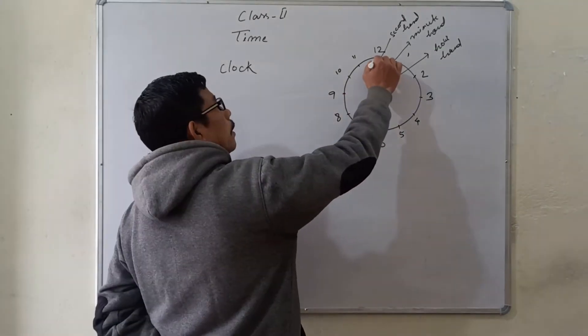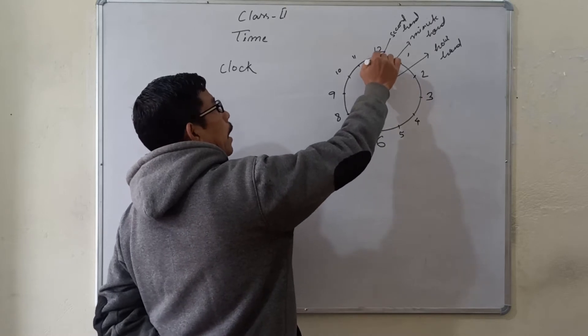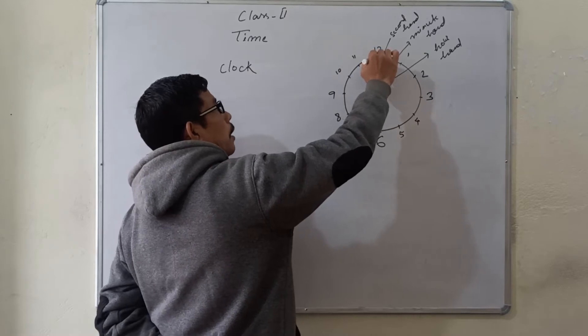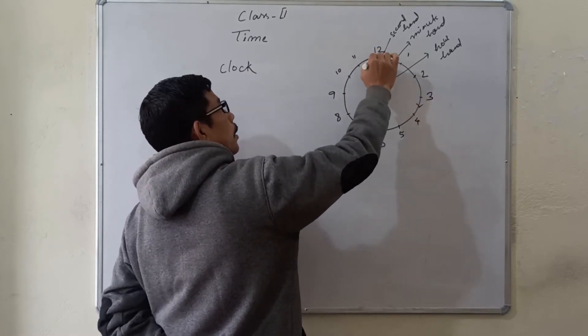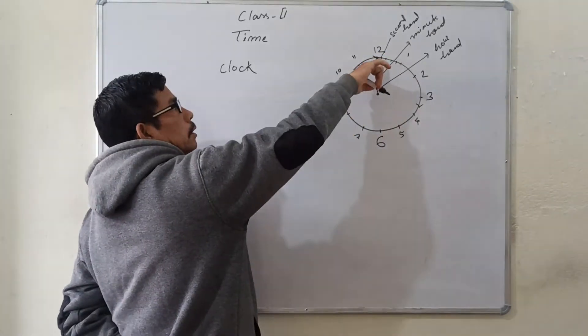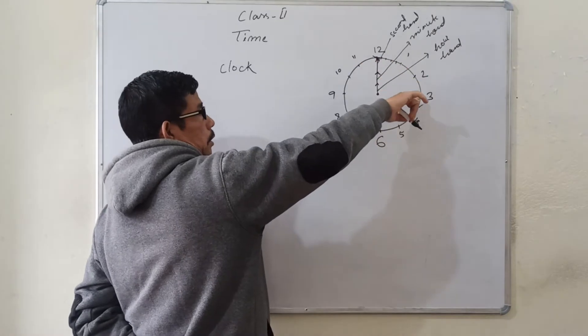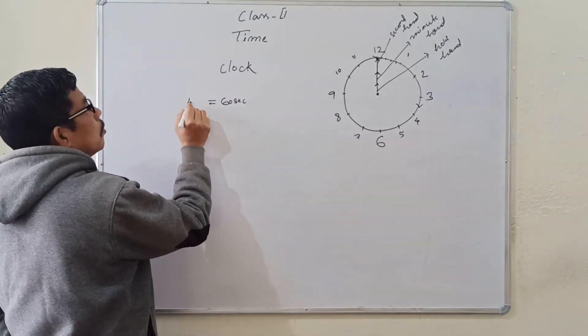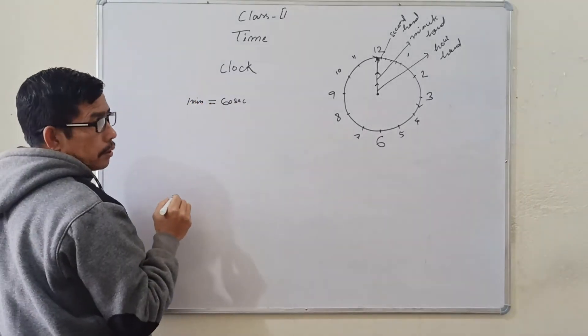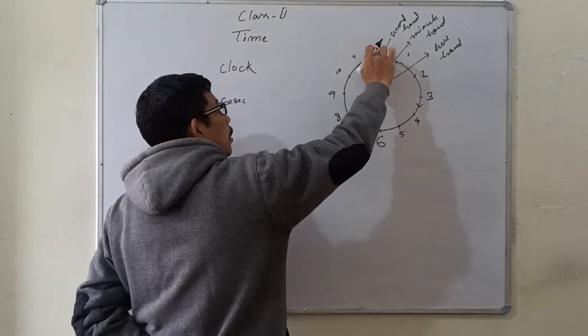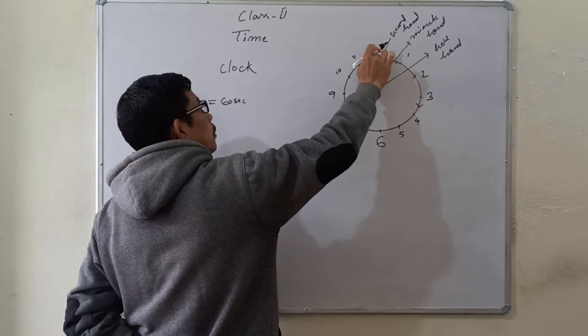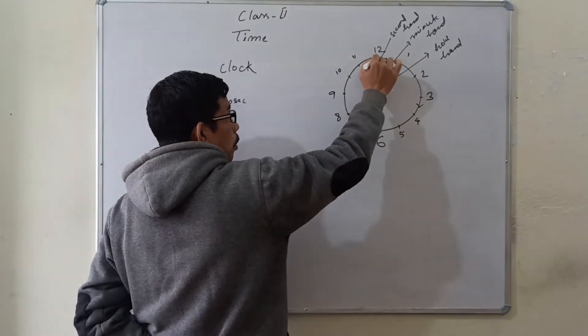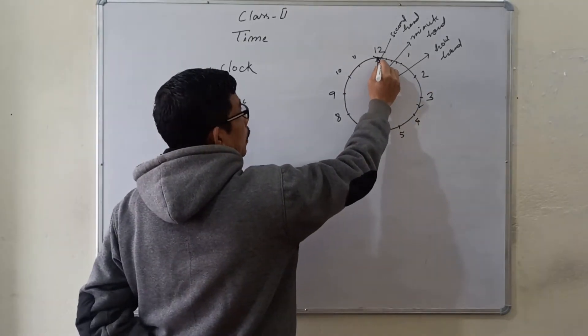When the second hand moves one complete rotation, from starting from here, coming here, that is when the second hand moves from 12 to 12, the minute hand will move to the next division.